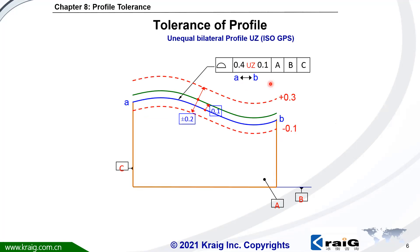There is another symbol used in ISO GPS — this is UJ. UJ represents an unequal tolerance zone. To understand UJ, we look at the definition. The original nominal surface is the blue one. You move this original surface outward 0.1. The first thing to look at is 0.1 — you move the original nominal surface outward. You get a green one, and this green one is the new nominal surface. From here, you apply plus/minus 0.2.